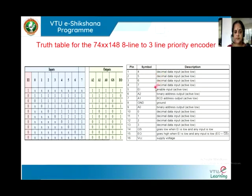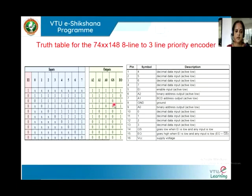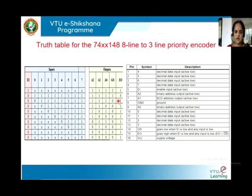This is the truth table, and here is the pin description for the 74LS148. The inputs are listed, and A0, A1, A2 are the outputs. GS will go low when EI is low and any one of the inputs is low — as seen from the truth table. The output needs to be considered only when GS is low, not otherwise. EO will go high when EI is low and any one of the inputs is low. When considering the output on this 8-to-3 line priority encoder, check the status of GS and EO: if GS is low and EO is high, the outputs on A0, A1, A2 are valid; otherwise they are not valid.